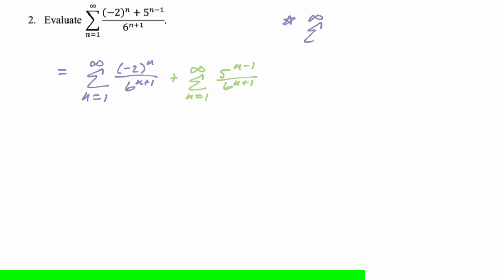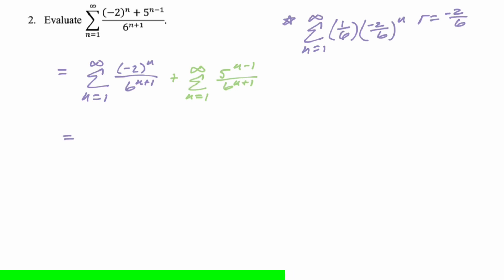For the first part, I'll rewrite using 1/6 times (negative 2/6) to the n, so r equals negative 2/6. The absolute value is less than 1, so this converges. The first term (n=1) is 1/6 times negative 2/6, which is negative 2/36 or negative 1/18. Divided by 1 minus r, which is negative 2/6 or negative 1/3.